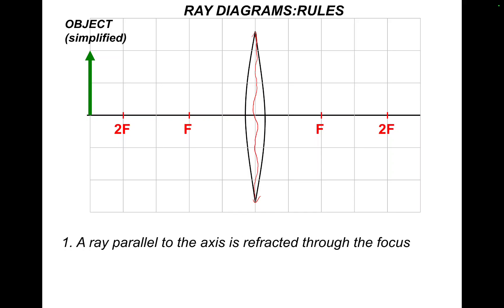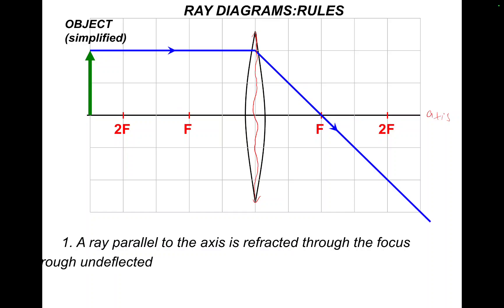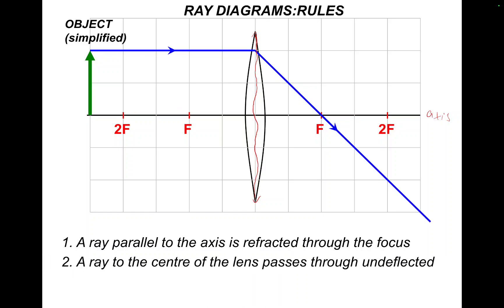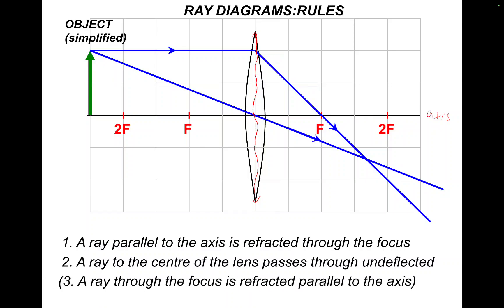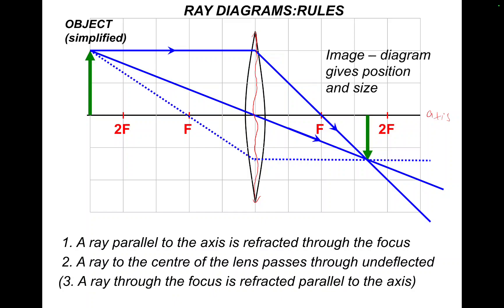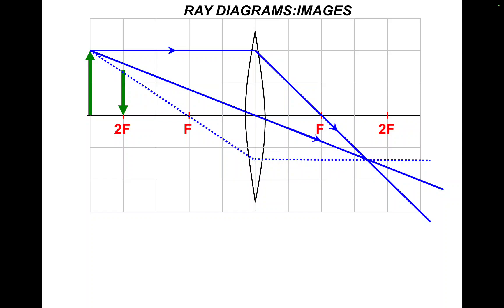So the first rule: a ray of light parallel to the axis refracts through the focus on the other side. The second rule: a ray passes straight through the optical centre of the lens and is undeflected. That's actually enough for your ray diagram to establish where an image is formed. You could put a third ray in, but it's not necessary — it's simply the reverse of the first ray: pass through F first, hit the lens, then go parallel. Where these rays meet is where the image is, giving the position and size.